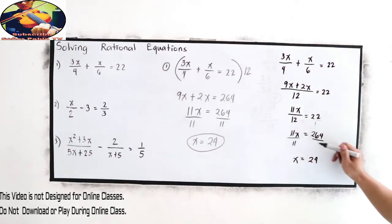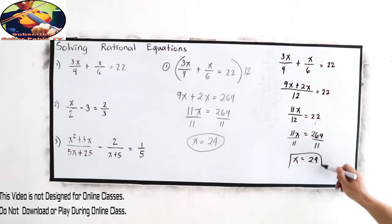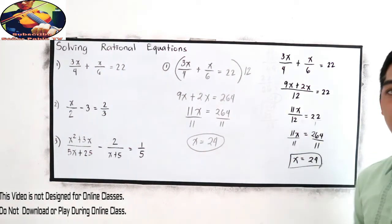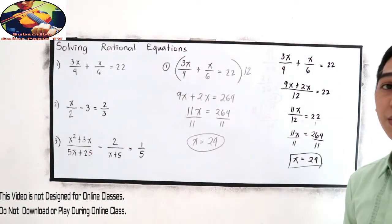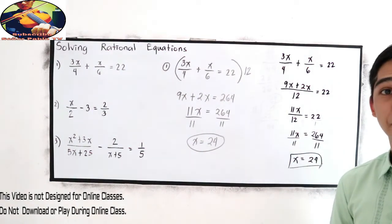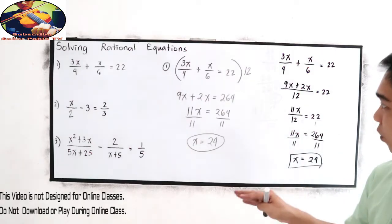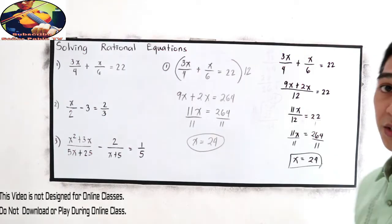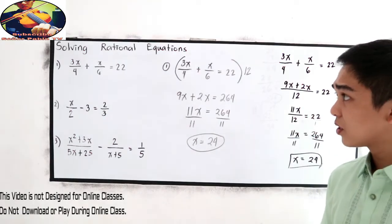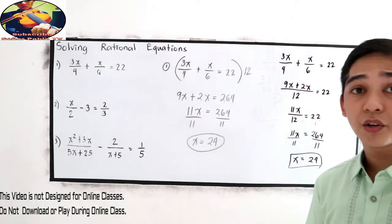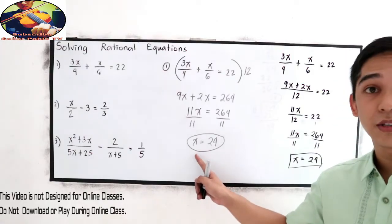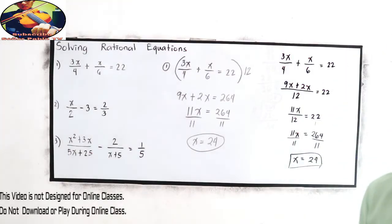So x is equal to 24. Both methods give the same answer. Whatever method we use, we come up with the same answer. You can check your answer by substituting the value of x.